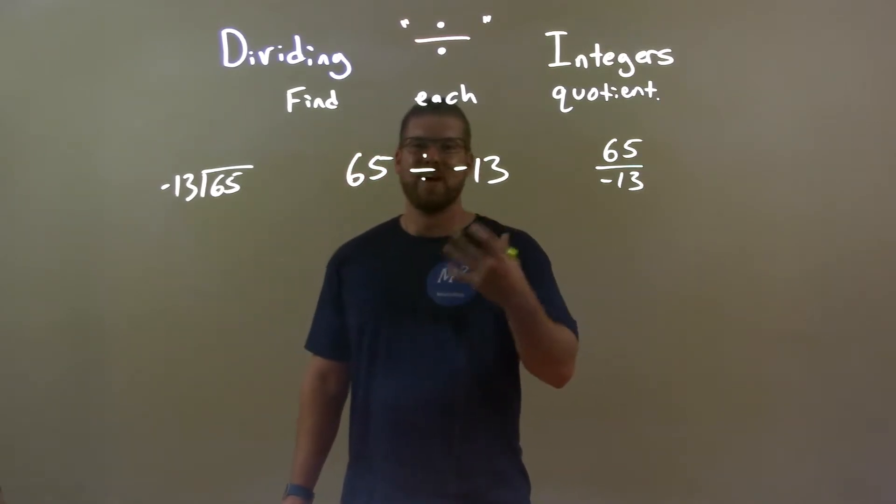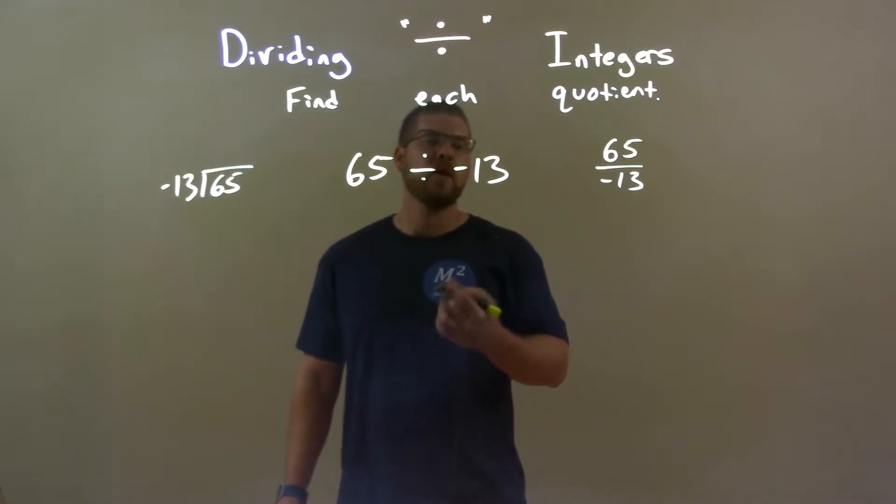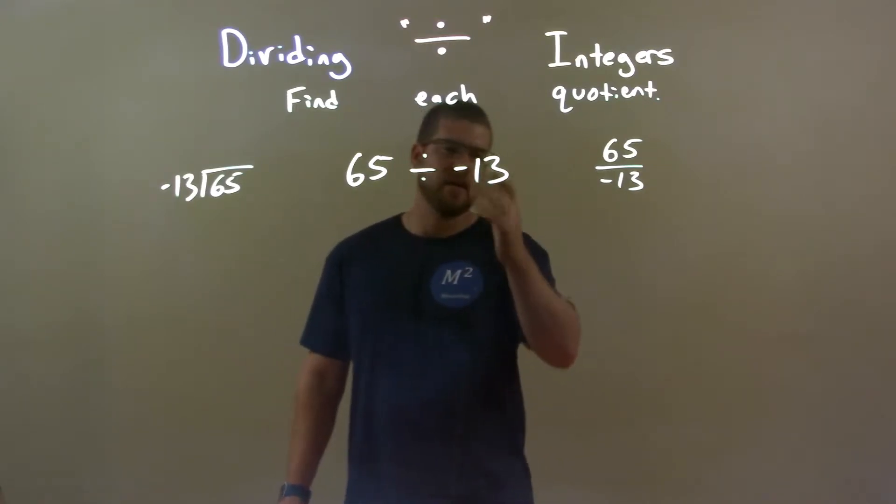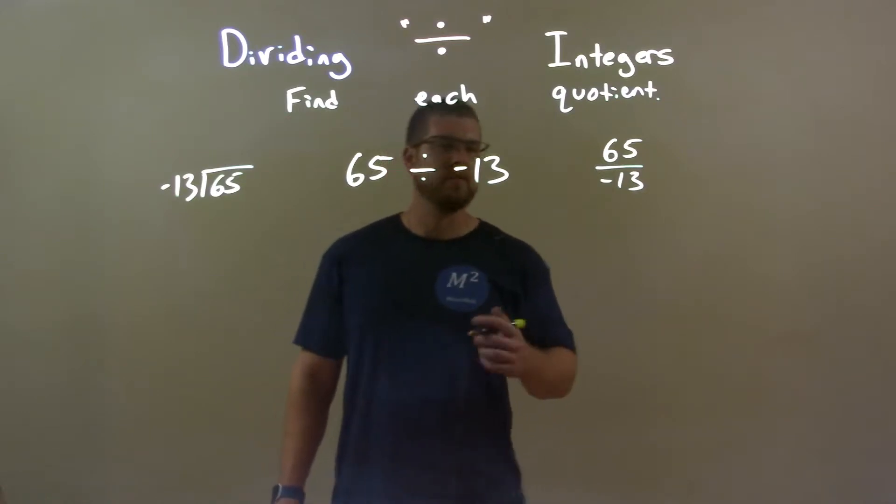What I like to do is kind of guess where I think it would be and test that number out. Well negative 13 goes into 65 how many times? Let's try a number close to this. So I'm going to test 5.